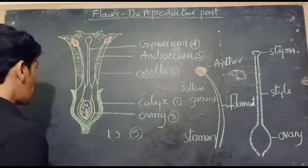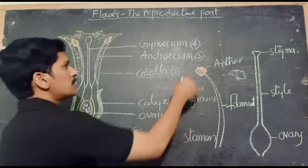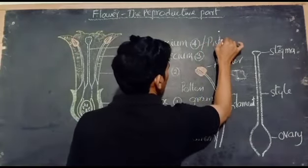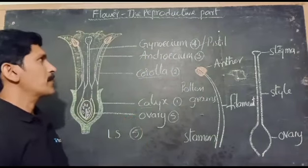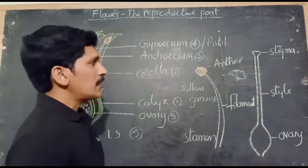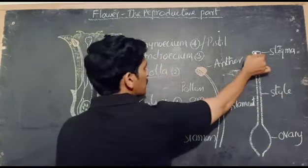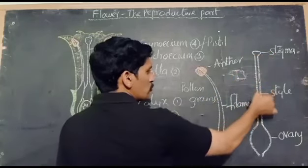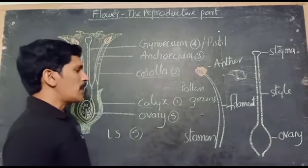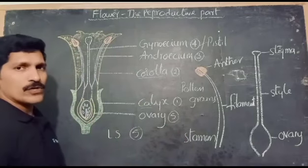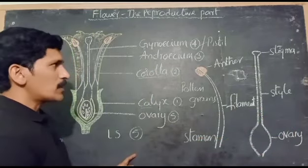The next one is the gynoecium, which is the fourth part of the flower present in the fourth whorl. Gynoecium is generally called the pistil — it is the female reproductive part of the flower. The gynoecium contains three parts: stigma, style, and ovary. The topmost part is the stigma, the stalk-like structure is the style, and the widened part at the bottom is the ovary. Inside the ovary we can find ovules, and after fertilization the ovary converts into fruit and the ovules turn into seeds.